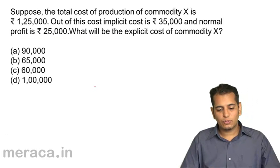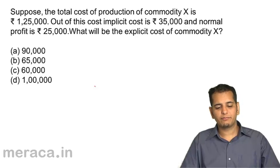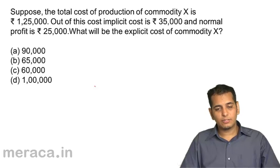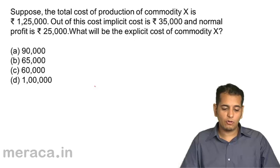Suppose the total cost of production of commodity X is ₹1,25,000. Out of this cost, implicit cost is ₹35,000 and the normal profit is ₹25,000. What will be the explicit cost of commodity X? (a) 90,000, (b) 65,000, (c) 60,000, (d) 1,00,000.